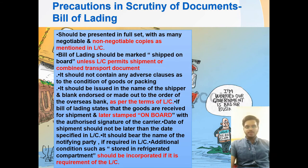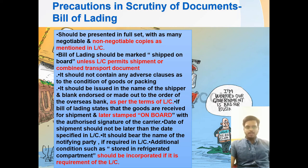Precautions in scrutiny of the bill of lading: it should be presented in full set with negotiable and non-negotiable copies as mentioned in the LC. The bill of lading should be marked 'shipped on board' unless the LC permits a shipment or combined transport document. It should not contain adverse clauses as to the condition of goods or packing. It should be issued in the name of the shipper and blank-endorsed or made out to the order of the overseas bank as per LC terms. The date of shipment should not be later than the date specified in the LC, and it should bear the name of the notified party if required.